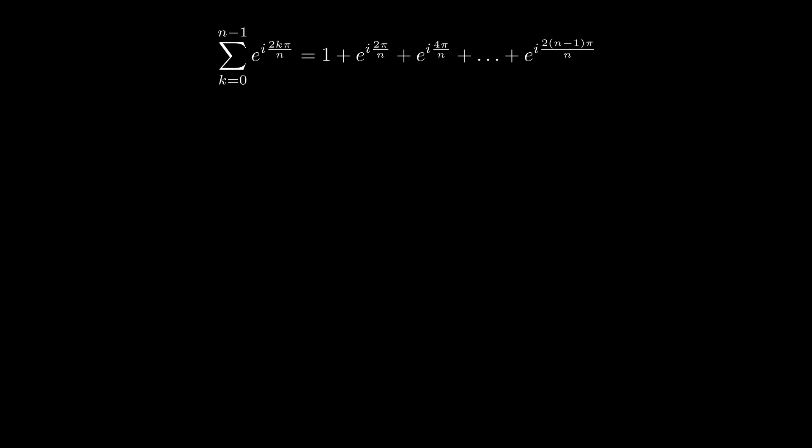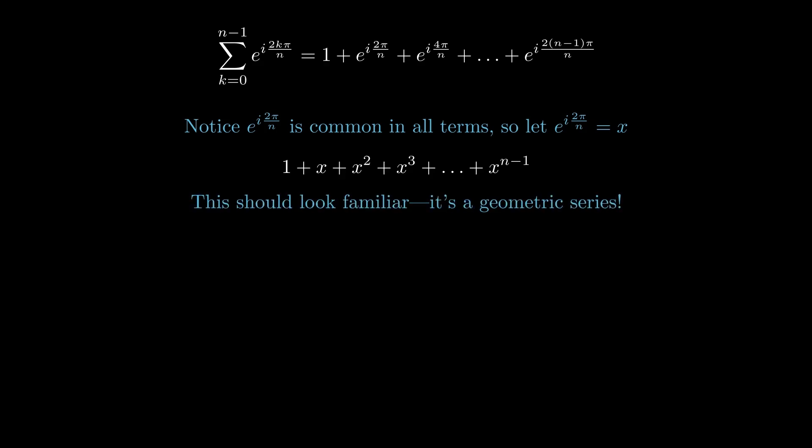Notice that e to the i(2π/n) is common in all terms. So, let's make things simpler by setting e to the i(2π/n) equals x. Now, our series looks like this: 1 plus x plus x squared and so on. This will look familiar. It's a geometric series. We can use a specific formula given by (1 - x^n)/(1 - x).